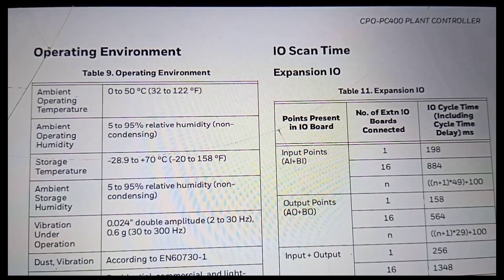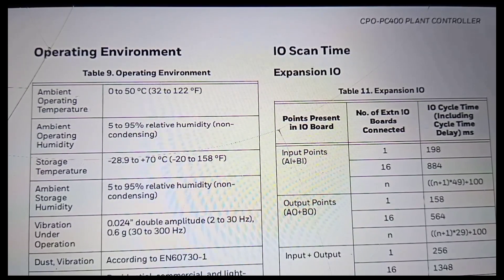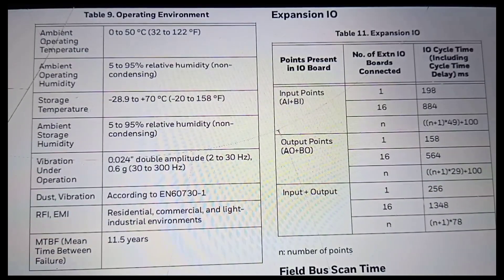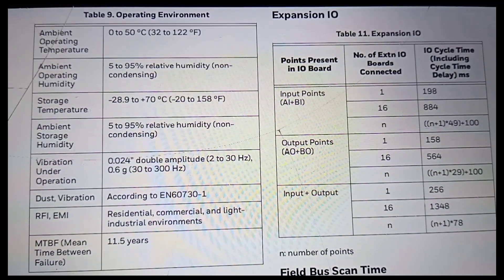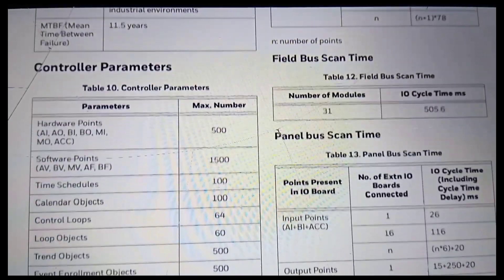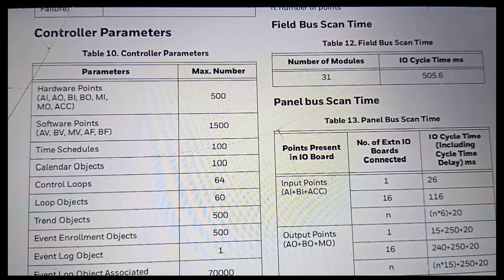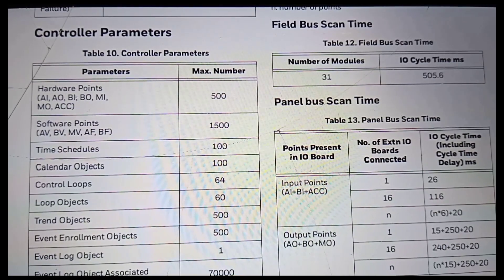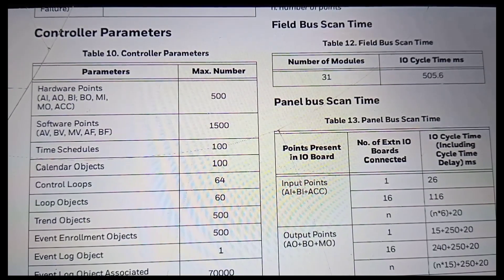Features and benefits: Conforms to BACnet standard 135 protocol version 1.14, ISO 16484-5. Multicolor LEDs to show the operational status of the isolated RS-485 communications, HMI device, Ethernet connection, and service state of the controller.